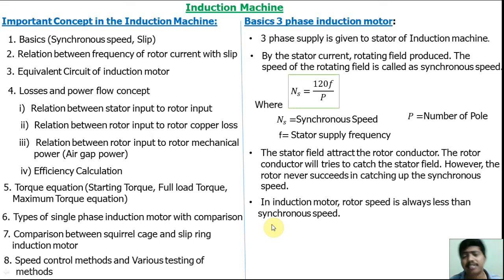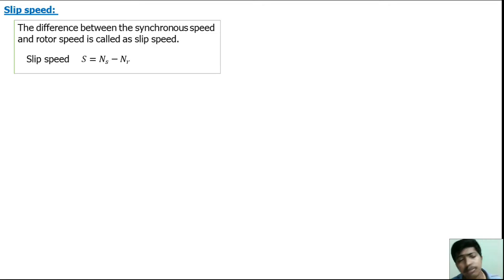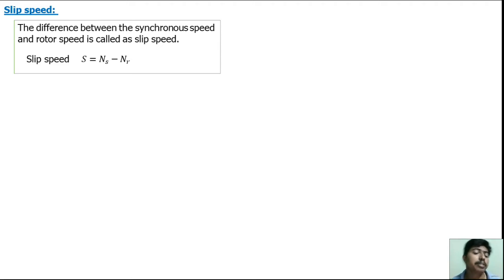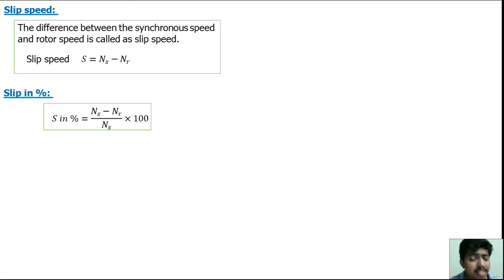If the rotor rotates faster than synchronous speed, the machine acts as an induction generator. Slip speed is defined as the difference between synchronous speed and rotor speed: slip speed = Ns − Nr. Slip in percentage is defined as the ratio of slip speed to synchronous speed: slip = (Ns − Nr) / Ns × 100. These are the basic concepts.